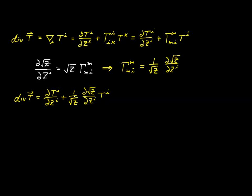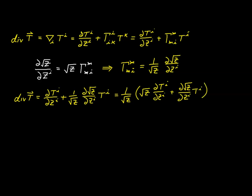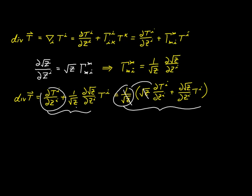The next step is to factor out the term of 1 over the square root of z and make the expression look like this. We'll develop this as a grouped expression, factoring out 1 over the square root of z. If we do that, we have to include a factor of the square root of z for the first term. Then the second term is just the partial derivative of the volume element with respect to z^i times t^i.